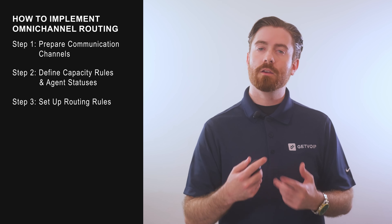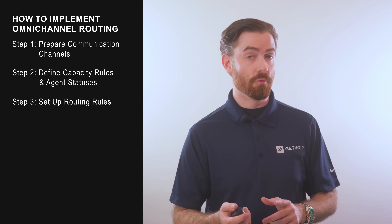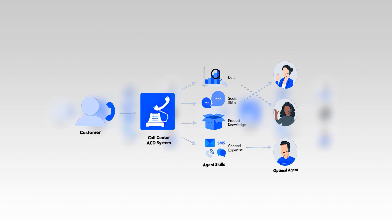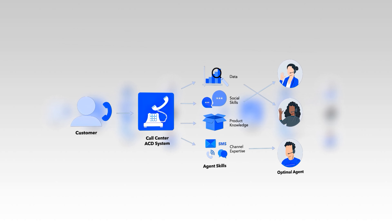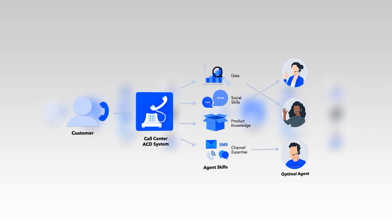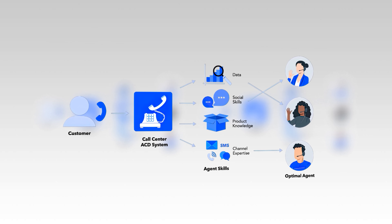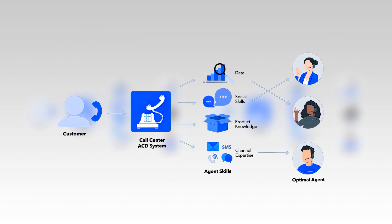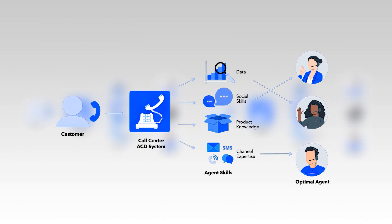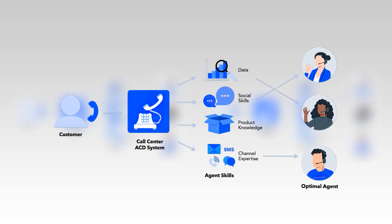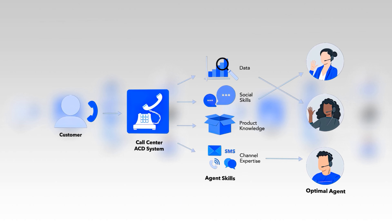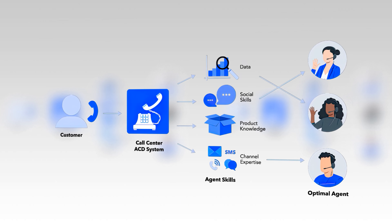Step 3: Set Up Routing Rules. The routing options and the way rules are defined will vary depending on the provider, but in general, admins will define how communications are handled by defining triggers, conditions, and actions.